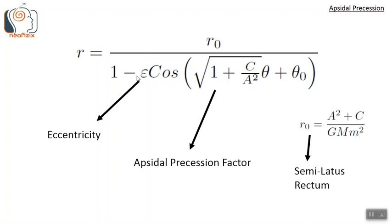Epsilon (ε) is the eccentricity of the orbit. This formula is very similar to the usual elliptic orbit solution, but with one key difference: the angular variable theta is associated with a constant coefficient, the square root of (1 + c/A²). When c = 0, this formula simply becomes the equation of an ellipse. When c ≠ 0, this theta coefficient leads to apsidal precession — it is called the apsidal precession factor, and it depends on both the angular momentum A and the factor c from the modified gravitational potential.